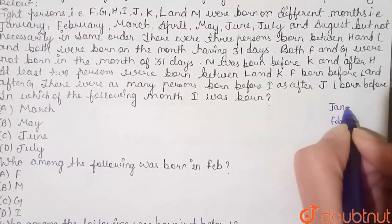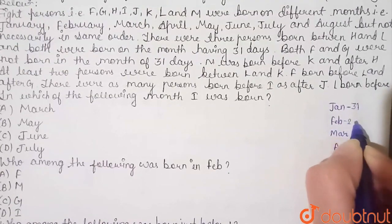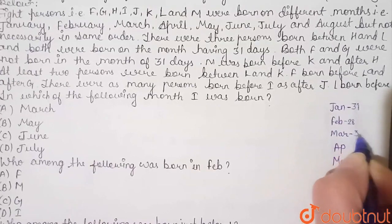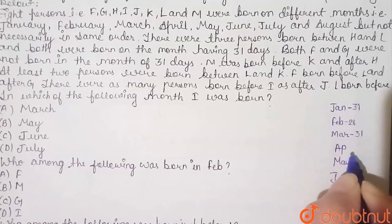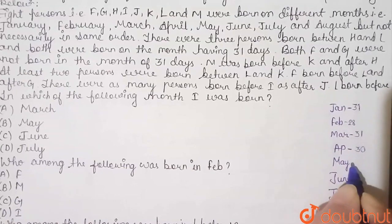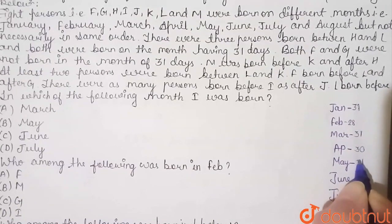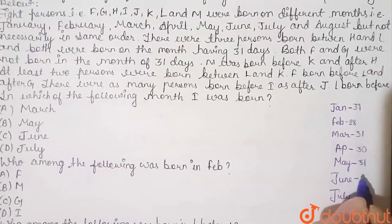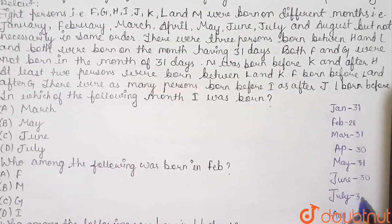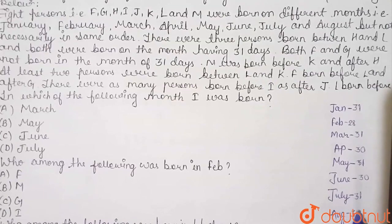January is 31 days. February is 28 days. March is 31 days. April is 30 days. May is 31 days. June is 30 days. July is 31 days. August is 31 days.